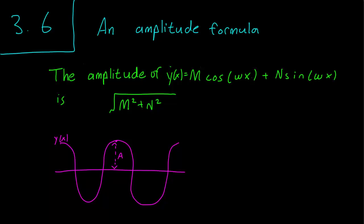The formula simply states that if we have a function of this form, M cos(ωx) + N sin(ωx), then the amplitude is square root of M² plus N².